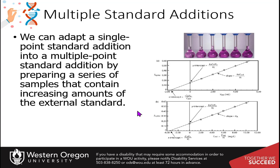The multiple standard additions method is a little more complicated because you're dealing with the graphic representation, just like we saw with multiple external standards. You're going to make up all of your samples, and your zero sample is actually the sample you want to analyze — it already contains your unknown concentration. You keep that constant in all of your standards, and then for each standard, you add a known amount of standard in increasing amounts, just like with external standards, but your sample is also represented in each one.